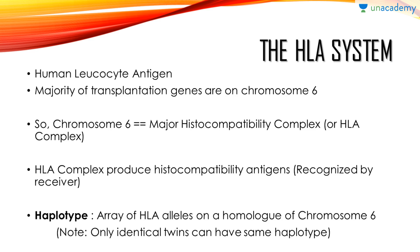The main thing you need to remember is on chromosome number 6, there is the major histocompatibility complex — also called the HLA complex. Histo is related to your genetic structure, and compatibility relates to the compatibility check. So there is a complex which checks your histocompatibility. It is also called human leukocyte antigen. This antigen may provoke another person's immune system to make antibodies against it.